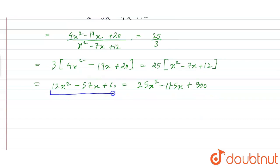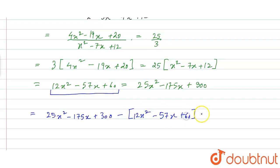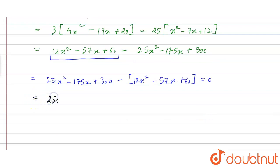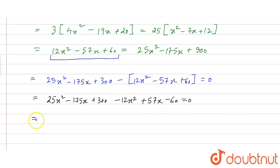Shifting all terms to one side, we get 25x squared minus 175x plus 300 minus 12x squared plus 57x minus 60 equals 0. Simplifying: 13x squared minus 118x plus 240 equals 0.